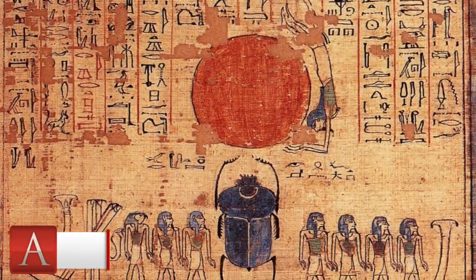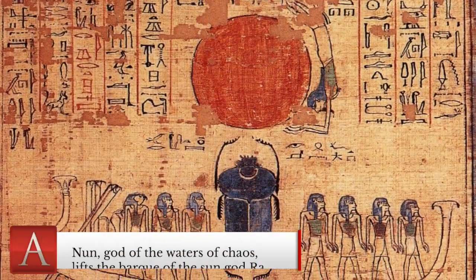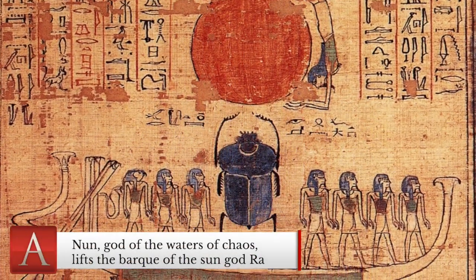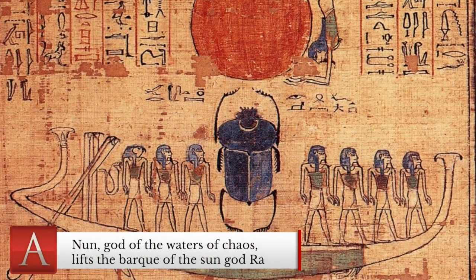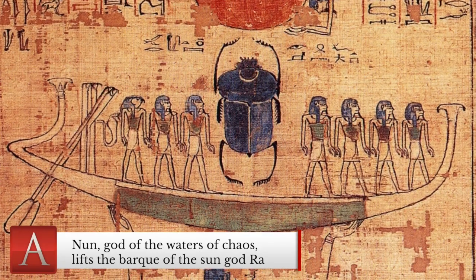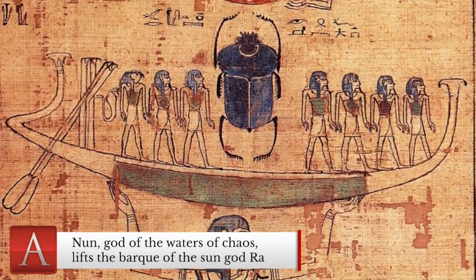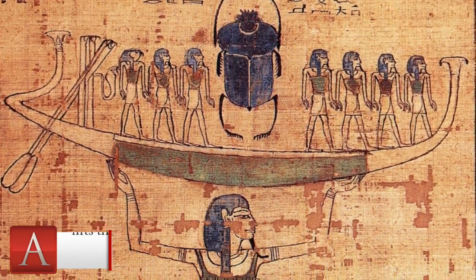Religion in Ancient Egypt was a fully integrated part of the lives of every Egyptian, and this ever-present spiritual world was symbolized through common images and symbols in art, architecture, amulets, and objects. Two of the most important of these symbols are the Ankh and the Jed.